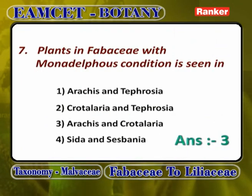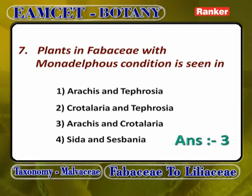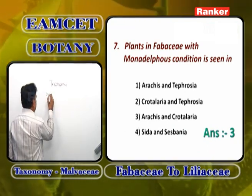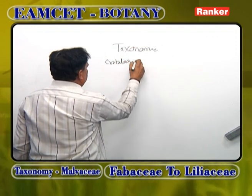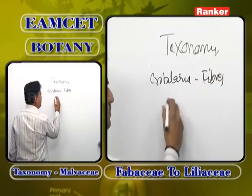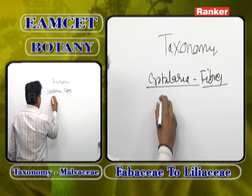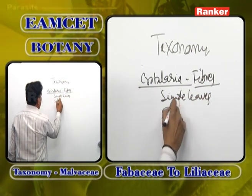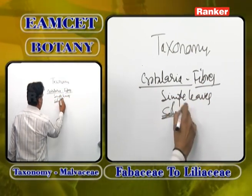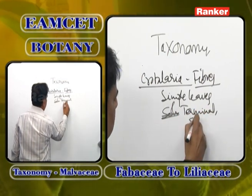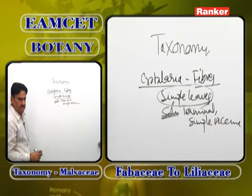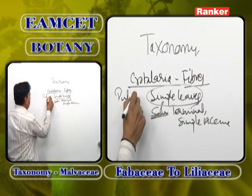Plants of Fabaceae with Monadelphous stamens: Arachis and Crotalaria. Crotalaria gives fiber and shows simple leaves — it is the only plant in Fabaceae with simple leaves, showing pulvinate leaf base. The inflorescence is terminal simple raceme.